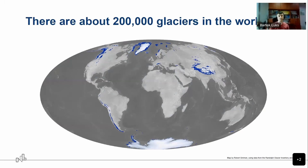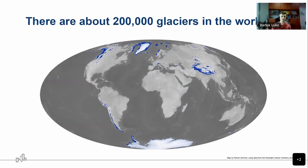This is a huge number, and we care about glaciers because they contribute to worldwide sea level. With a warming climate, all these glaciers can melt and pose a threat to us humans, but also to other living creatures, especially at lower altitudes.